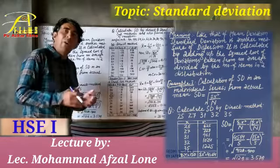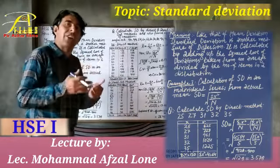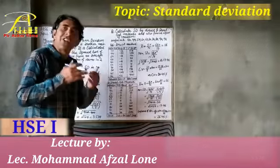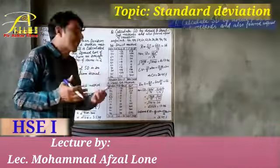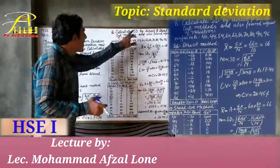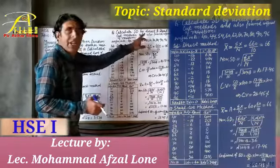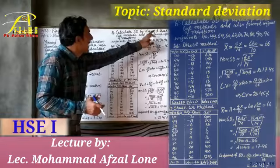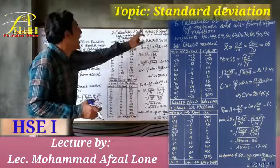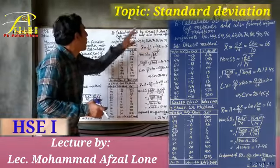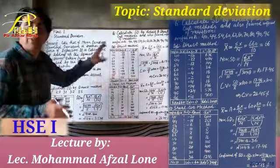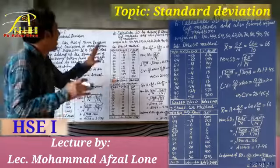Now we are going to calculate standard deviation by direct and shortcut methods. The example is: calculate standard deviation by direct and shortcut methods and also find the coefficient of variation. We have the values of the variable.